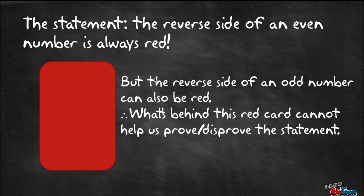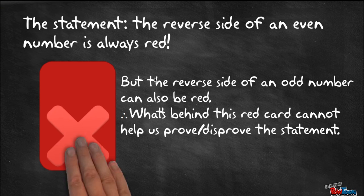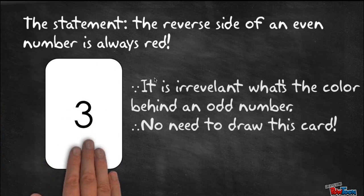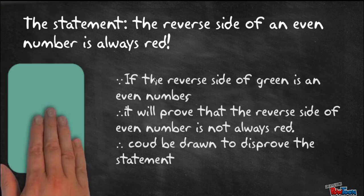But the reverse side of an odd number can also be red. So what's behind this red card cannot help us prove or disprove the statement. In addition to this, knowing the color behind an odd number is also irrelevant. So we shouldn't draw this card either.